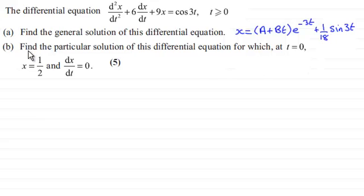And for part B now, we've got to find the particular solution of this differential equation for which at t equals zero, x equals a half and dx by dt equals zero for five marks. So if you'd like to have a go at this, just give you a moment to pause the video. And as usual, come back when you're done and you can check your work solution against mine.